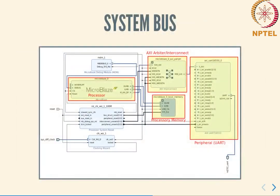We now need to understand how the processor communicates with the outside world. Typically this is done by means of peripherals. Examples of peripherals include the serial port (sometimes called the UART), the disk used for storage, keyboards, displays, mice, and many other things. The processor communicates with each of these devices by means of something called the system bus.